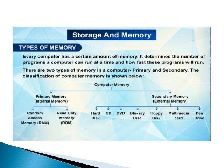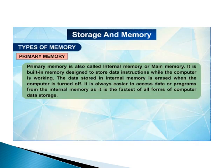Computer memory is divided into 2 types: primary memory and secondary memory. Primary memory is divided into RAM (random access memory) and ROM (read-only memory). Secondary memory is also called external memory and includes hard disk, CD, DVD, Blu-ray disk, floppy disk, multimedia card, and pen drive. Primary memory is also called internal memory or main memory. It is inbuilt memory designed to store data and instructions while the computer is working. The data stored in internal memory is erased when the computer is turned off. It is the fastest form of computer data storage.